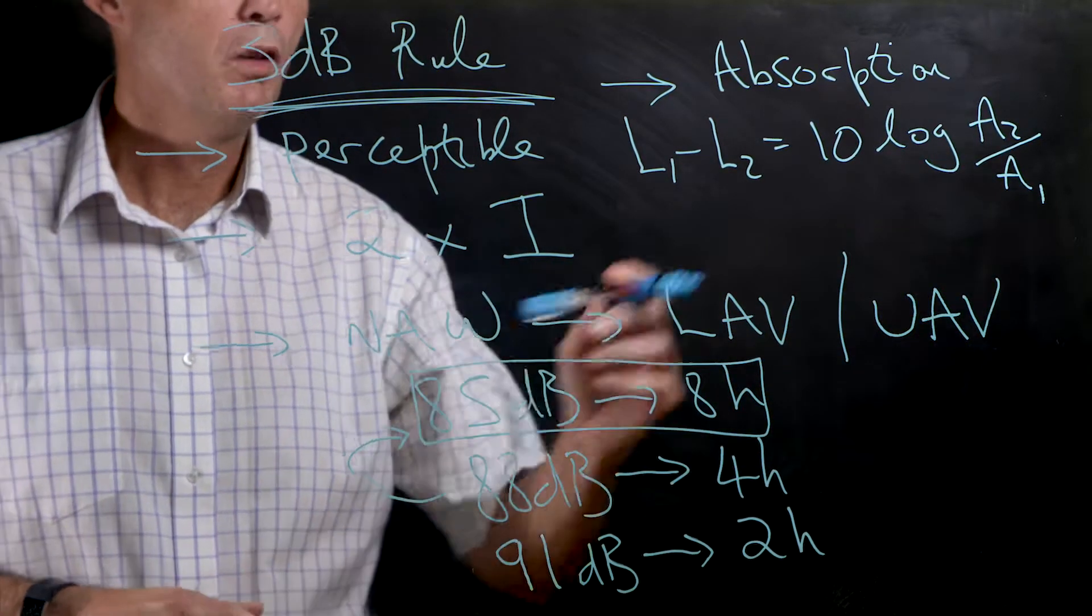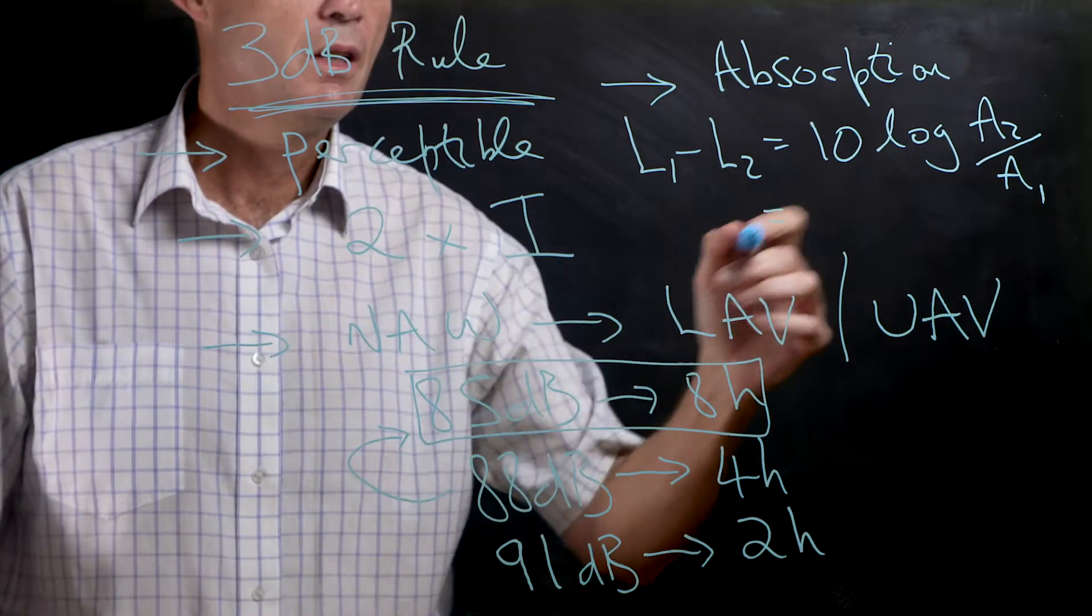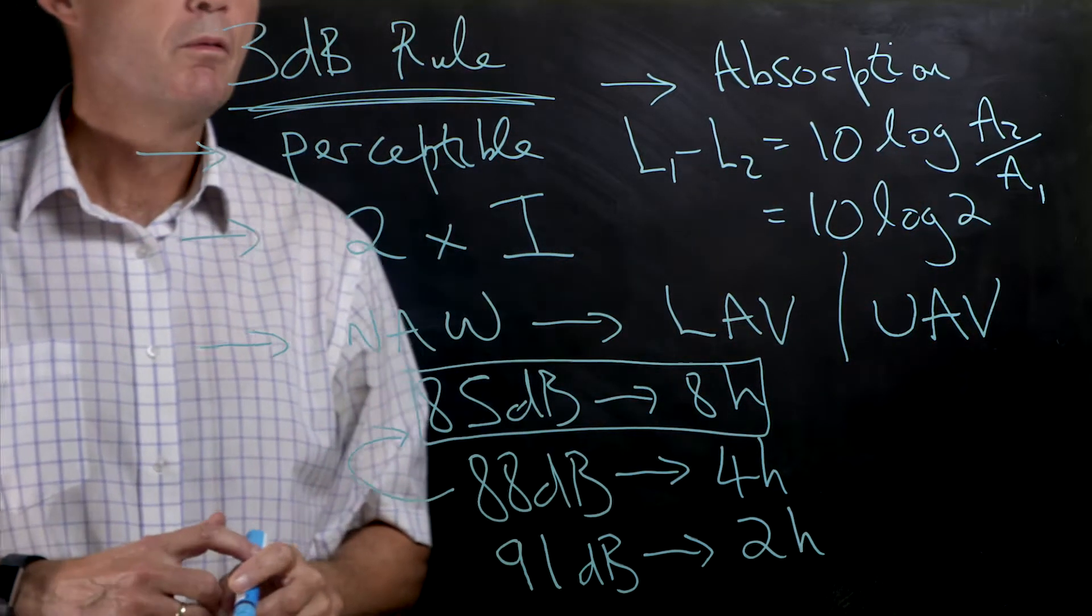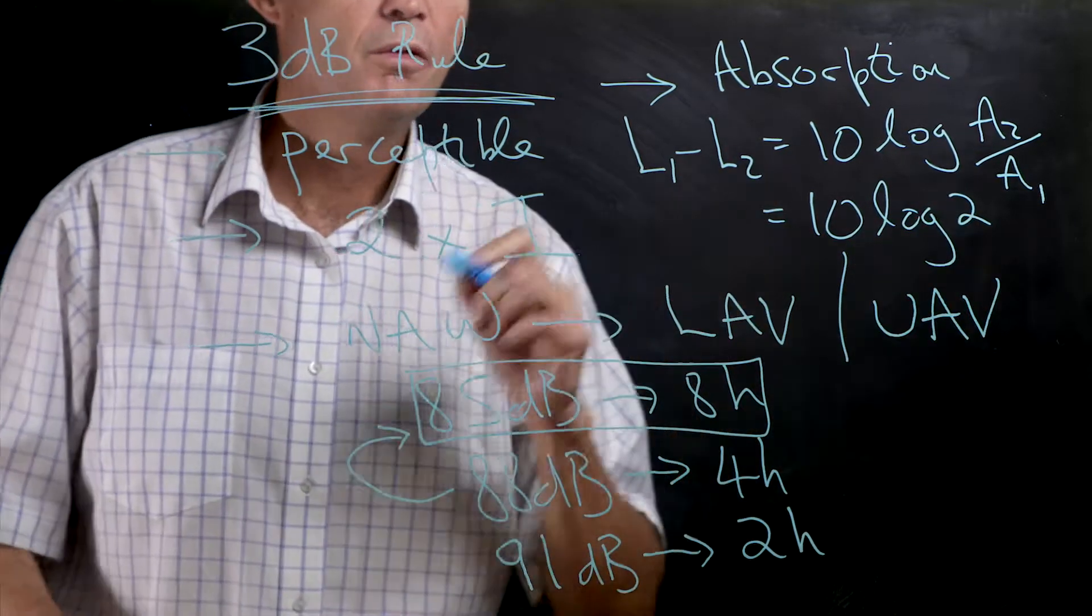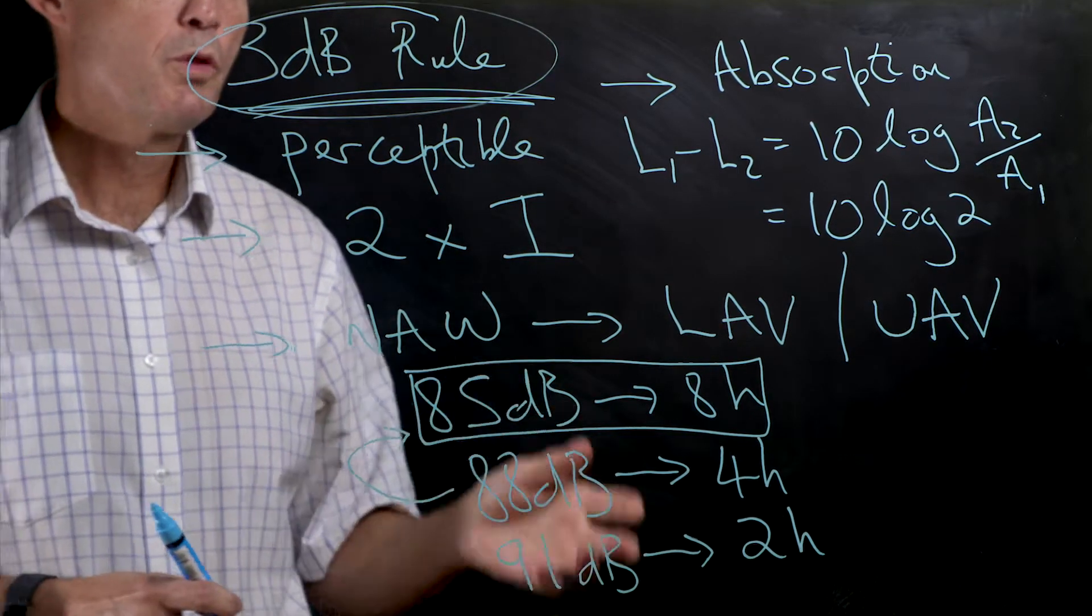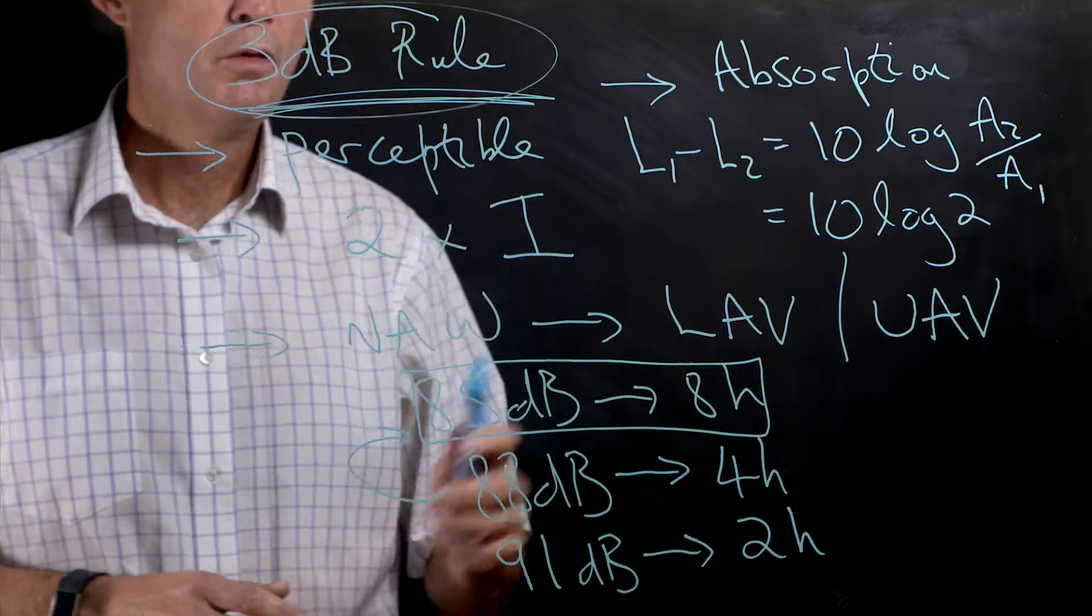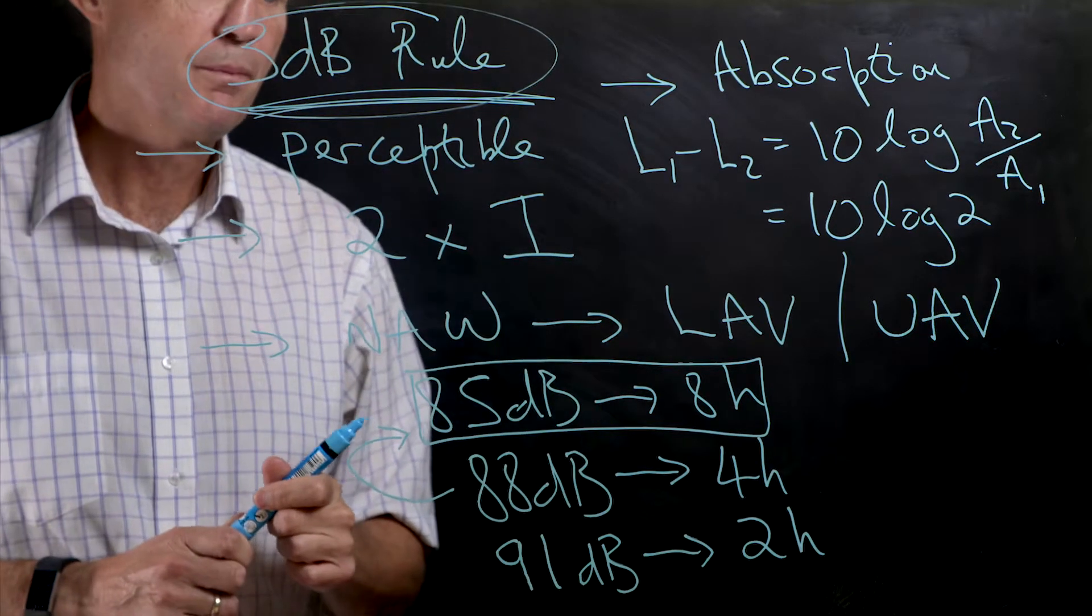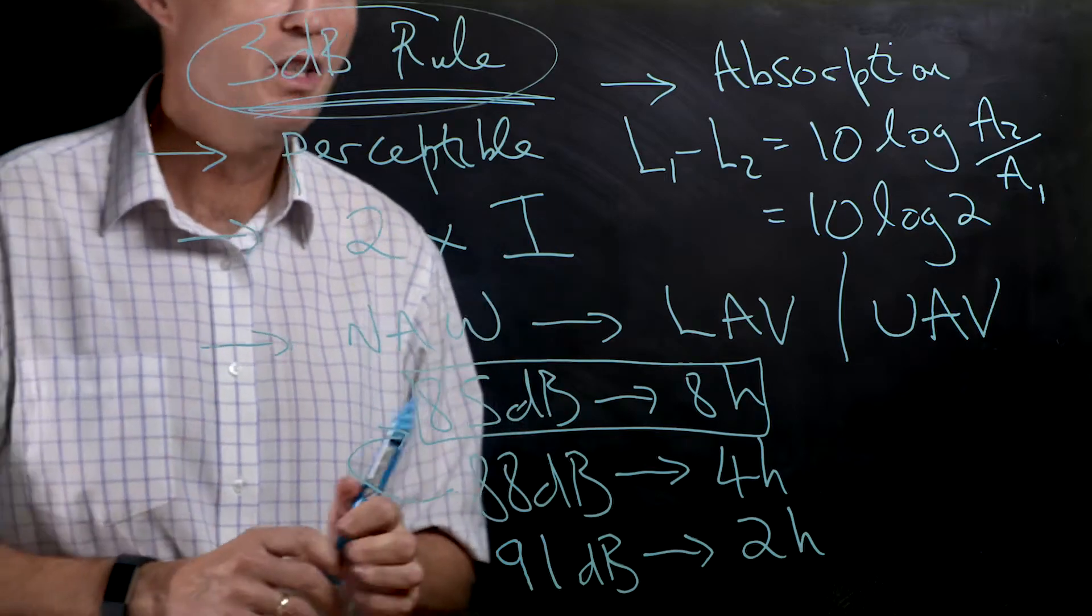We end up with 10 log 2, and if we work that value out, we'll actually get a value of 3dB. Therefore, a doubling of absorption in any space will result in a 3dB fall in your noise level. That concludes the 3dB rule.